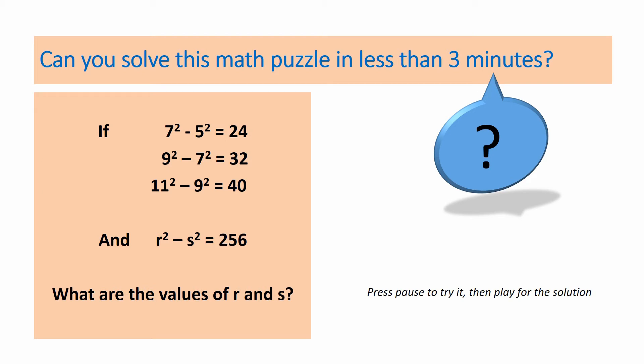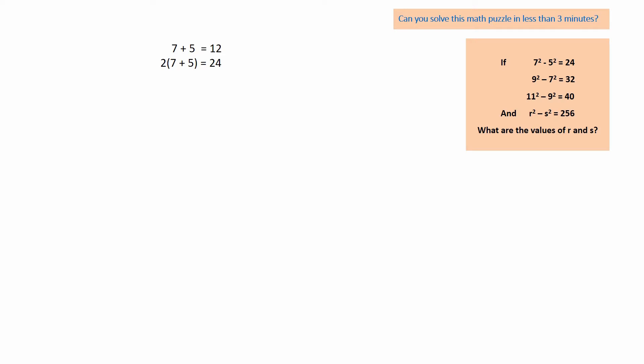Can you solve this puzzle? Press pause to try it. The video gives the solution. Notice that 7 plus 5 gives 12, which when doubled gives the answer 24. This same rule can be applied to the other lines in the pattern. Also notice that the difference between the two numbers is always 2.